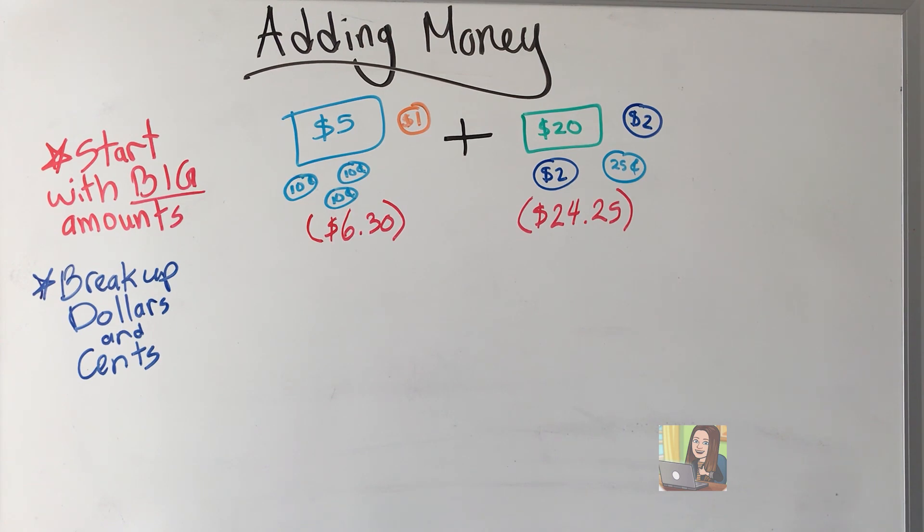The last video we had was about counting money and counting the values of money. This video, we're not focusing on that. So when the questions you see, the counting has already been done for you. It's a good review to go back and double check. Was that math correct?